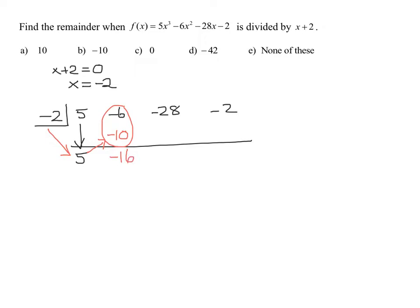And then we repeat the process. Negative 2 times negative 16, we're going to write the answer up here. So negative 2 times negative 16 is 32. And now add these two numbers. What's negative 28 plus 32? Is 4.